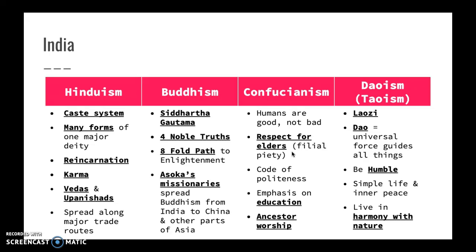Confucianism and Daoism are the two religions and philosophies — more so philosophies — in China. Confucianism is based on the belief that all humans are fundamentally good. It emphasizes respect for elders, which leads to ancestor worship. It has a code of politeness and an emphasis on education, and the civil service tests are based on Confucianism. Daoism, also known as Taoism, developed in China under the founder Lao Zi. They believe in the Dao — a universal force that guides all things — and this is where the yin and yang symbol comes in. Daoists believe people should be humble, live a simple life, and the most important belief is living in harmony with nature.